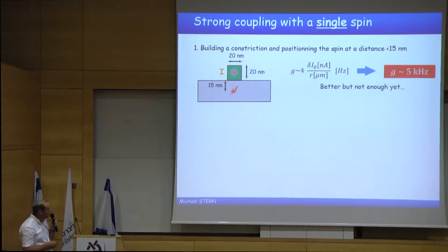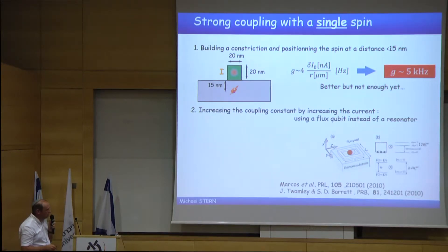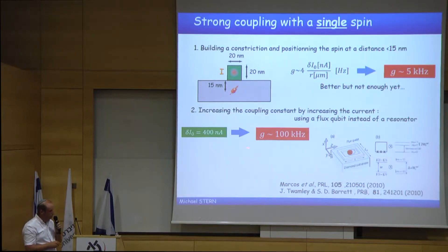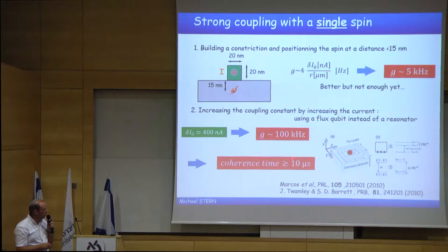If I want to go further, I need to increase as much as possible the second parameter, the current fluctuation. How can I do that? Well, indeed, there is one system, one superconducting circuit, which has huge current fluctuation, and this system is a flux qubit. In flux qubit, you can have current fluctuation of the order of 400 nanoampere, and therefore, the coupling constant could reach 100 kilohertz. So if we can have a flux qubit with a coherence time of higher than 10 microseconds, we are done.